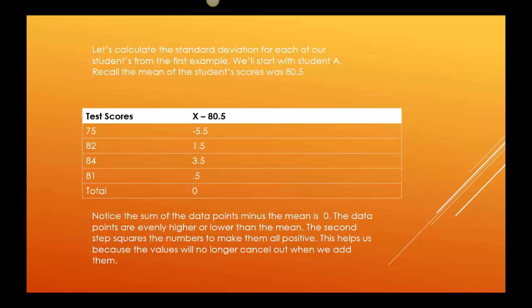So if you remember, we calculated they both had a mean of 80.5. So this is student A, and here's the test score of 75, 82, 84, and 81, and what you can see is I just took those numbers, and I subtracted 80.5. So I did 75 minus 80.5, 82 minus 80.5, 84 minus 80.5, and 81 minus 80.5, and you can see I got negative 5.5, 1.5, 3.5, 0.5.